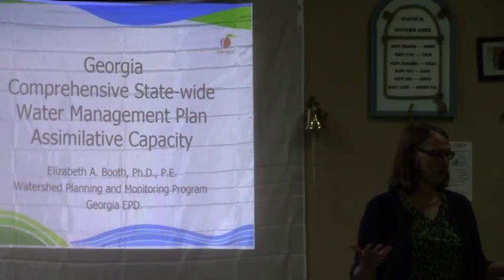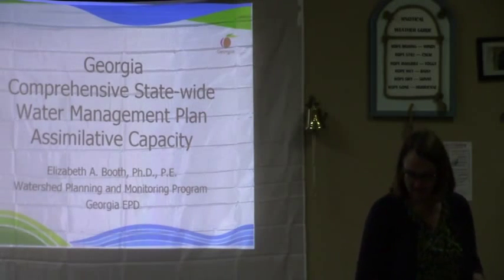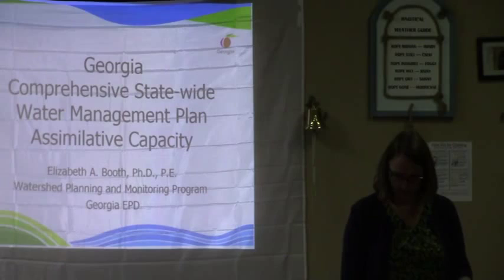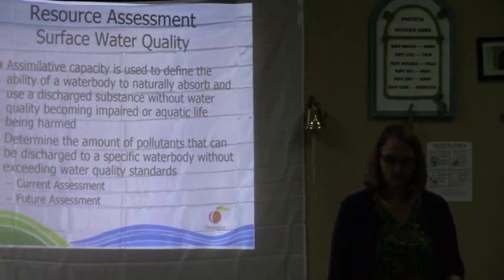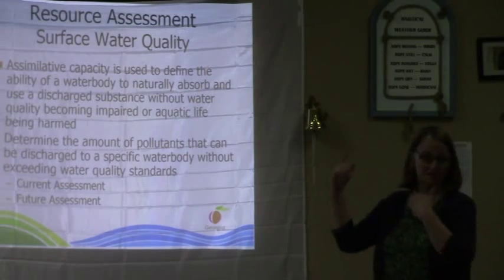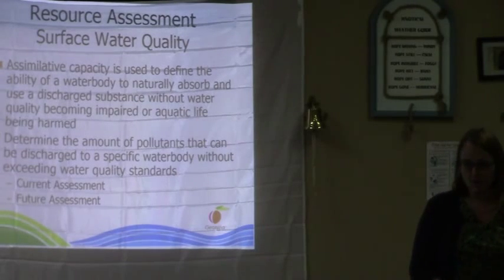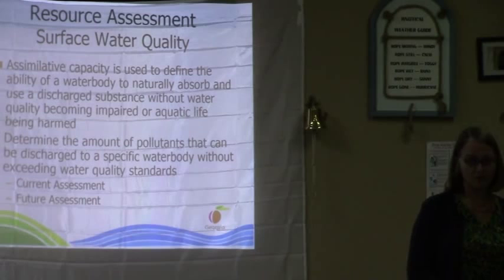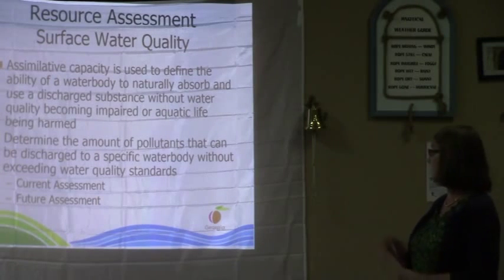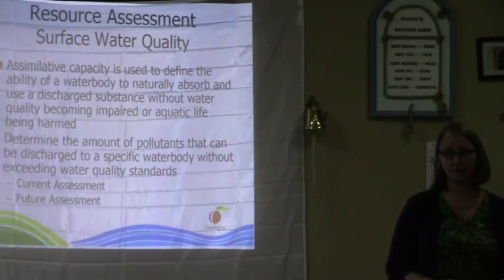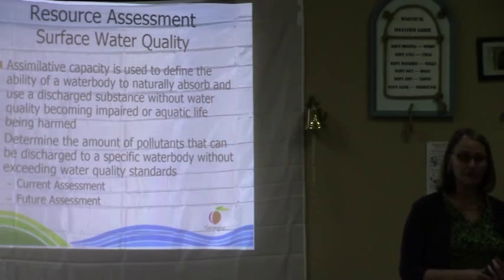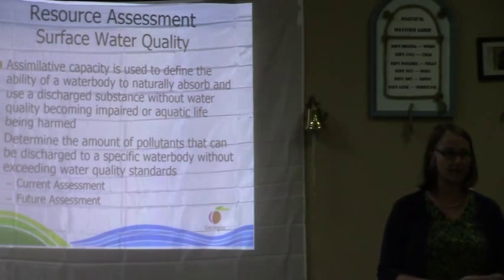When it came to the statewide water plan, our responsibility was to determine the assimilative capacity of those streams. Part of our resource assessment was the water quality aspect of it for surface water. We were determining the assimilative capacity, which is defined as the ability of a water to naturally absorb and use water quality.